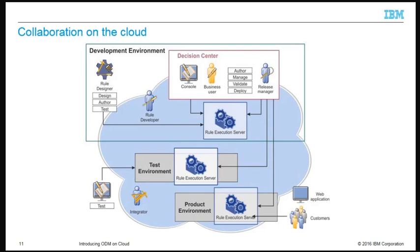Business Users work primarily in Decision Center Business Console. They implement and maintain business rule artifacts and run tests and simulations to validate any rule changes. The Integrator builds the applications that call the decision service deployed in the cloud environments. The Release Manager orchestrates the lifecycle of a decision service and is ultimately responsible for deploying it into production. The Release Manager can take on all of the ODM roles.